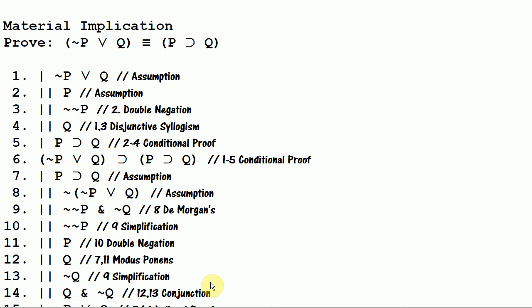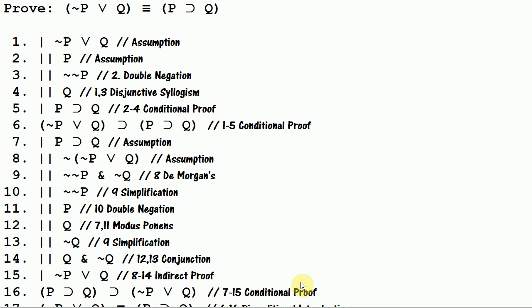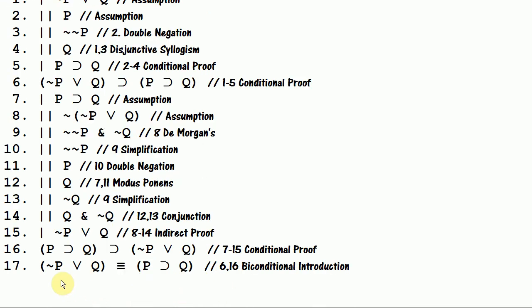I was just thinking of another way to do this that might be quicker — possibly save a line. That method would be to simplify to not Q and through modus tollens get not P, and then simplify again and conjoin not P with not not P, and that would be a contradiction. But this works too — we have our contradiction. And then through indirect proof we can say not P or Q. And that lets us conclude this conditional proof: we get if P then Q, then not P or Q. And then we can use biconditional introduction to get not P or Q is materially equivalent to if P then Q.